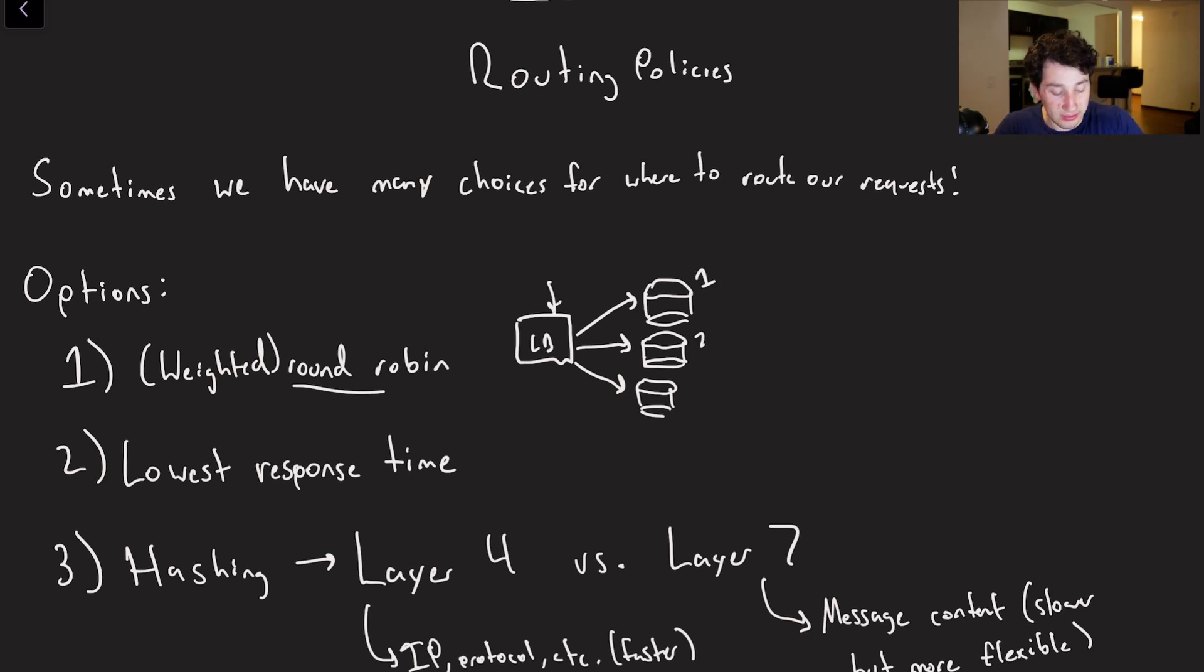we could send one to this database, two to this next one, three to here, and then we would wrap around, this is request number four. Of course, let's say this node right here is two x as powerful. Then we would send this guy requests one and two, and then send this guy request three, and then four, and then this guy five and six. So that's kind of the concept of weighted round robin.